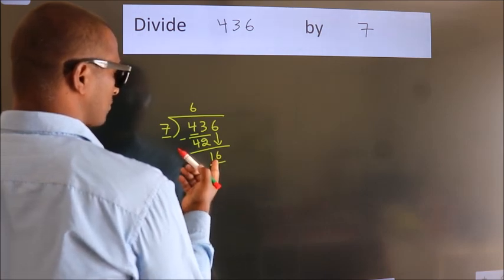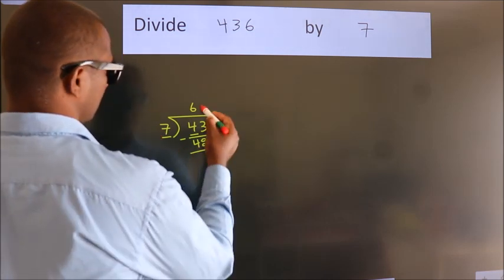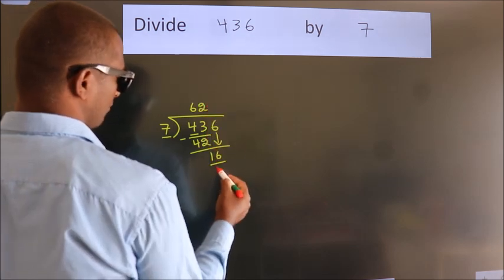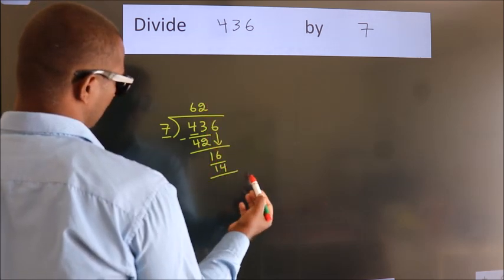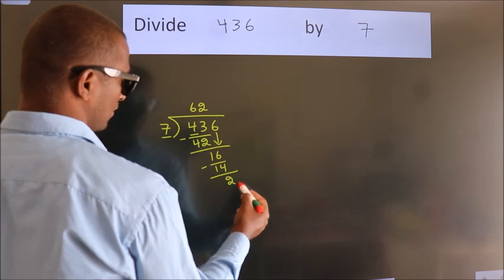A number close to 16 in 7 table is 7, 2, 14. Now, we subtract. We get 2.